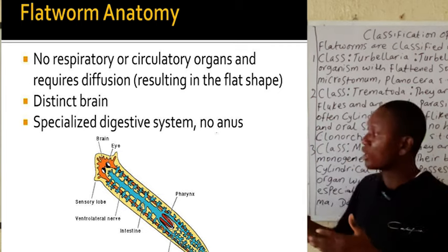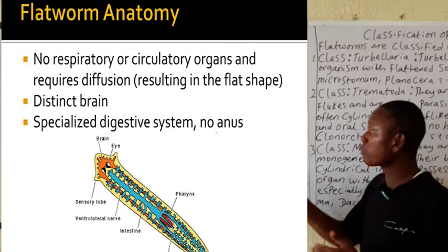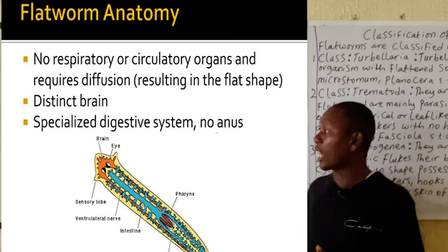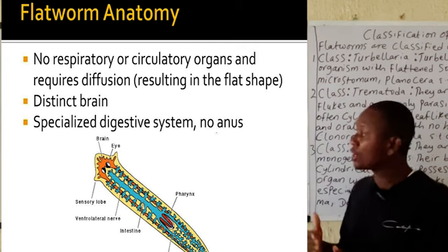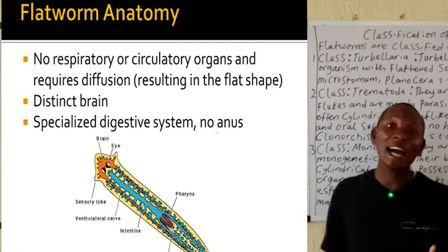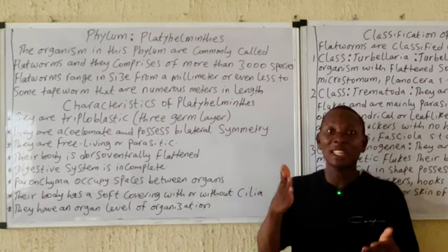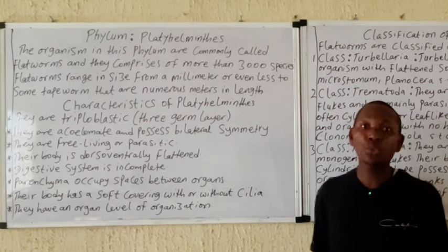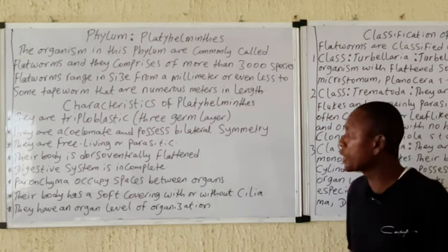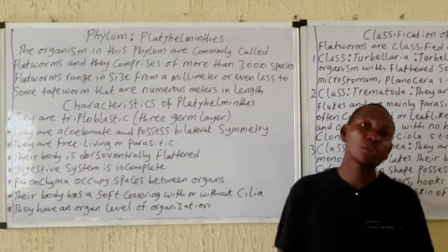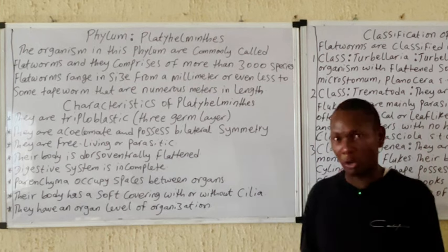The diagram of Platyhelminthes is being displayed on the board and some of these characteristics are being highlighted. They are bilaterally symmetrical, which means they can be cut into two equal halves through a particular plane. These organisms belong to the organ level of organization.